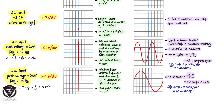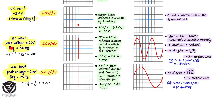In the next example, there's an AC input with a peak voltage of 20 volts and a frequency of 50 Hz, giving a period of 0.02 seconds. The y-gain is set at 5 volts per division. The alternating voltage causes the beam to move up by four divisions (20 ÷ 5) and then down four divisions, creating a vertical line when the time base is off. When the time base is on, the beam sweeps left to right producing a sine wave on the screen.